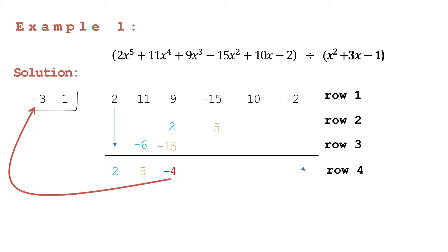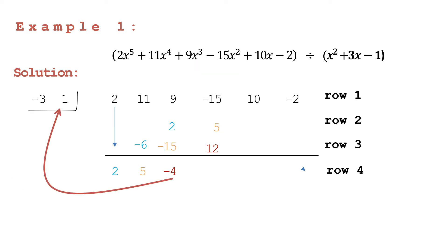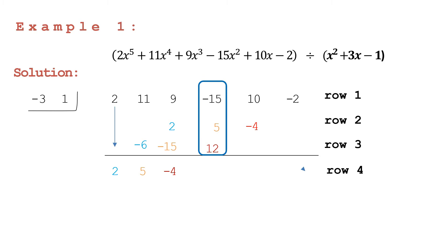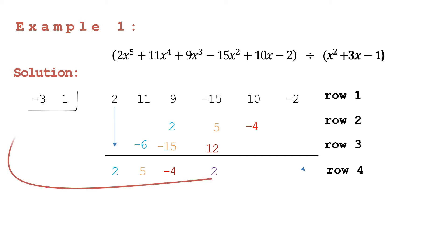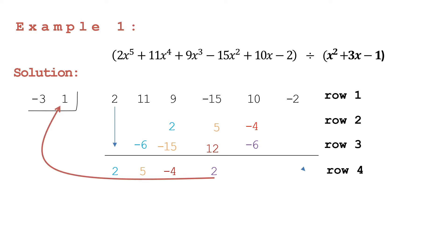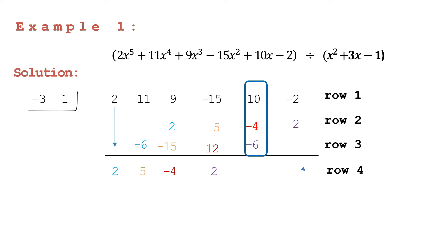11 plus negative 15 is equal to negative 4. Repeat the process: negative 4 times negative 3 is equal to positive 12; write positive 12 in row three, fourth column. Negative 4 times positive 1 is equal to negative 4; write negative 4 in row two, fifth column. Then add the fourth column to get positive 2. Multiply positive 2 to our divisors: 2 times negative 3 is equal to negative 6; write negative 6 in row three, fifth column. 2 times 1 is equal to positive 2; write positive 2 in row two, last column.